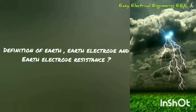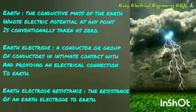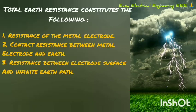How do we define earth, earth electrode, and earth electrode resistance? First, earth: the conductive mass of the earth whose electric potential at any point is conventionally taken as zero. Earth electrode: a conductor or group of conductors in intimate contact with and providing an electrical connection to the earth. Earth electrode resistance: the resistance of an earth electrode to earth.